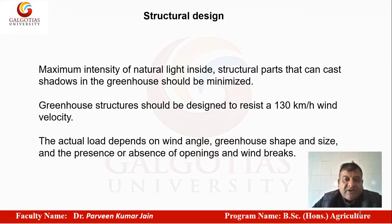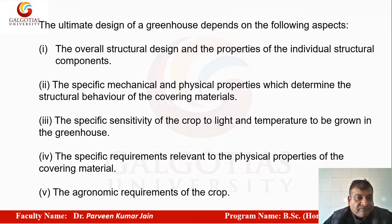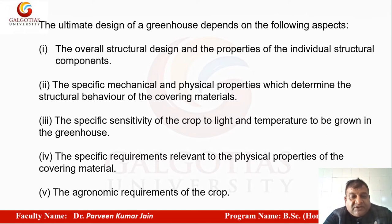We should have a sturdy and heavy structure that can withstand extra loads from snow, crops, or people working on the polyhouse for changing sheets. The ultimate design of a greenhouse depends on the overall structural design properties of individual components, the specific mechanical and physical properties of covering materials, and the specific sensitivity of the crop to light and temperature to be grown in the greenhouse.